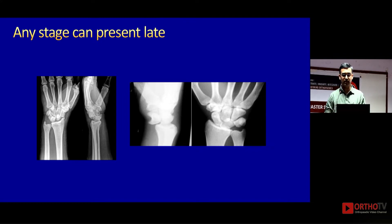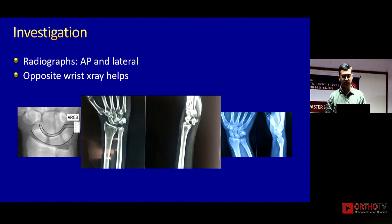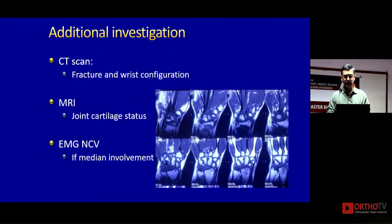Any stage of perilunate — whether it be a lunate dislocation, transcaphoid, greater arc, or lesser arc — can be missed. Please assess the X-rays carefully. Whenever you see an X-ray like the one in the center and you're not able to find out what's wrong, go back to the normal X-ray on the left, keep it in your phone, compare using Gilula's arc, and then assess. Take X-rays of the opposite side as well.